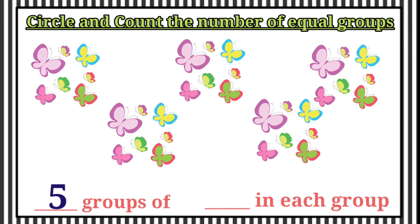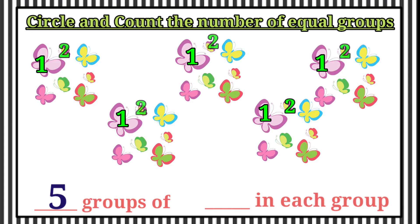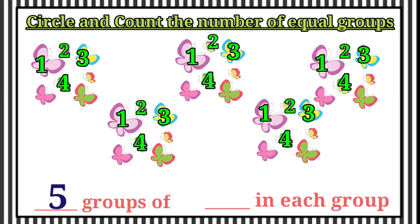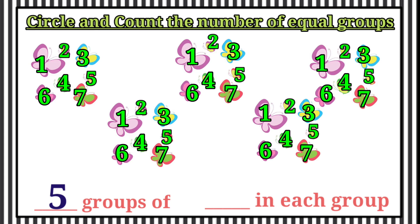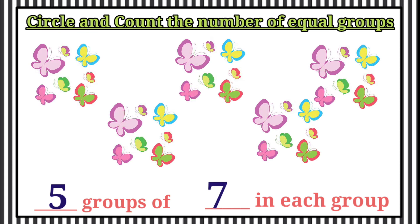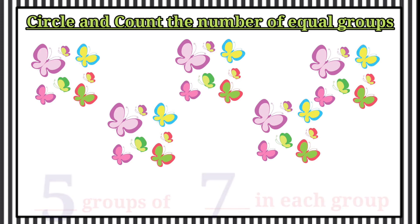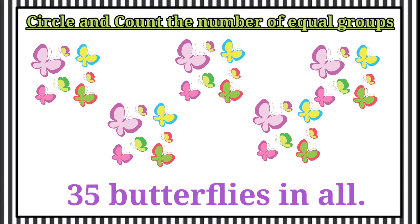Now we are going to count how many in each group. 1, 2, 3, 4, 5, 6, 7. Here 7 in each group. So, therefore the answer is 35 butterflies in all.